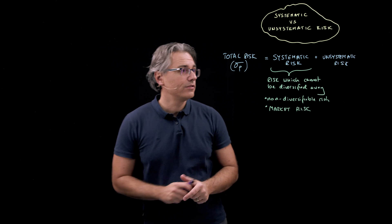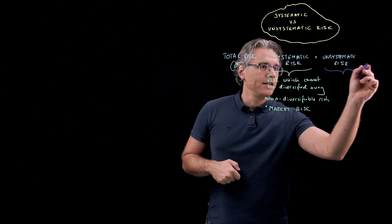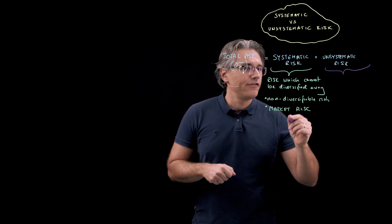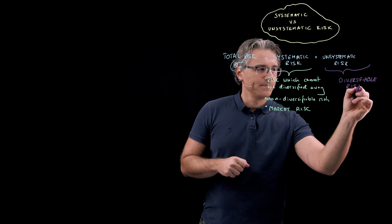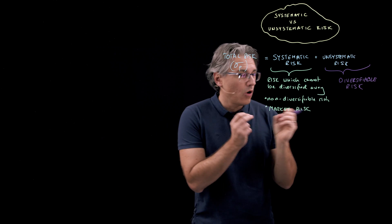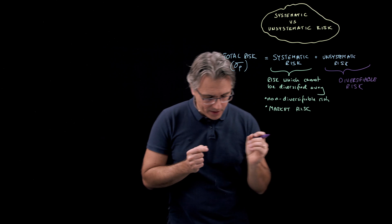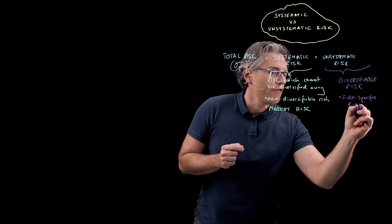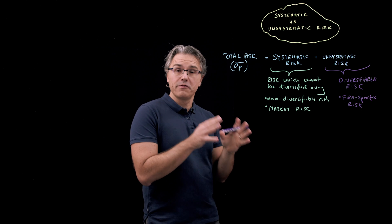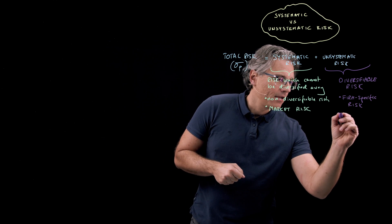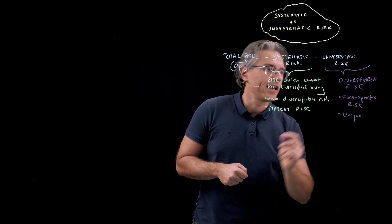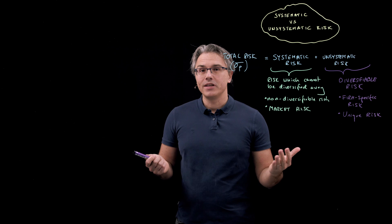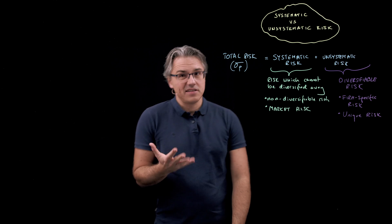On the other hand I've got unsystematic risk. Now this is the very opposite of systematic and this is going to be diversifiable risk implying we can get rid of this one. It's risk which can be diversified away. We also call this firm specific risk because it's nothing to do with overall market factors or economic factors, it's to do with firm specific factors. Another name which I've written down in my notes is unique risk just in case you see this being written down in your exam under this name potentially.